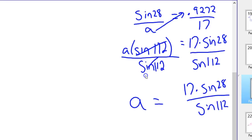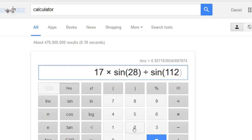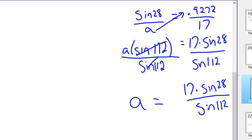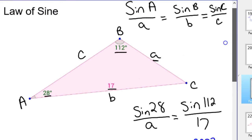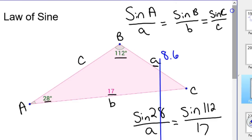And so we know a equals 17 times sine 28 divided by sine of 112. You can just plug all that in. So 17 times sine of 28, and always close your parentheses, divided by sine of 112. And what's nice is if I screwed it up, we should be able to see that on the triangle. And it looks like it's 8.6, 8.61. That seems reasonable.